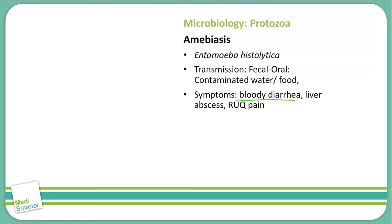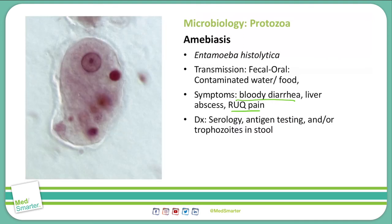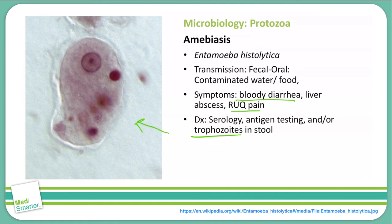Because of that liver infection, we can get right upper quadrant pain. To diagnose this infection, we specifically use serology and antigen testing, or you can also do a stool test and look for trophozoites in the stool. As you can see here, this is a trophozoite in the stool from someone infected by Entamoeba histolytica.